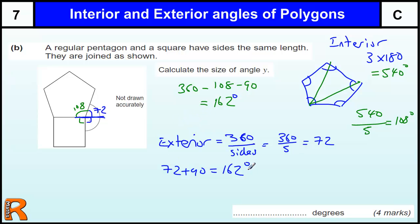Now, there'll be 2 marks for working out either the exterior angle or the interior angle, and then 2 marks for working out the final 162, using whichever method you went by.